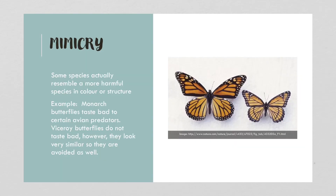Mimicry is actually quite a strategy. Some species actually resemble a more harmful species in color or structure. For example, monarch butterflies — because the caterpillars feed on milkweed, which is toxic — taste bad because of the stored up toxins. So birds, when they eat a monarch, will forever remember that an orange and black butterfly is not tasty. Viceroy butterflies don't taste bad — they're perfectly edible. However, they look so similar to a monarch butterfly that birds will avoid them as well.